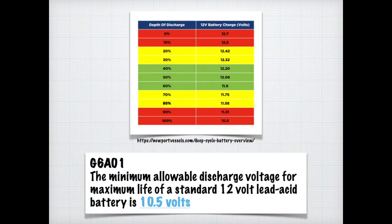If you encounter a question on the test that says, what is the minimum allowable discharge voltage for the maximum life of a standard 12-volt lead-acid battery? If you look at this chart, you can tell that there's a definite red zone. You can overcharge and undercharge a lead-acid battery. For the exam, you just need to know that the minimum allowable discharge voltage for the maximum life of a standard 12-volt lead-acid battery is 10.5 volts. Don't let your batteries get below 10.5 volts. It shortens their life.